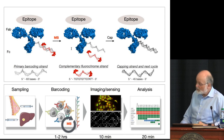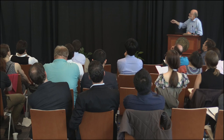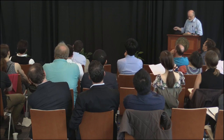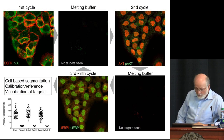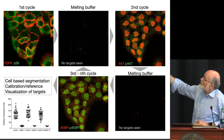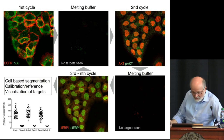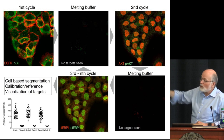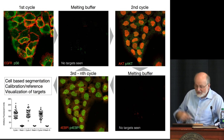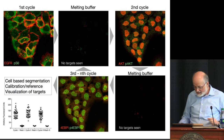Let me show you some examples. These are cells stained with EGFR and phospho-S6 during the first cycle. One adds the melting buffer - no signal at all. Then a second set of antibodies is applied to exactly the same cells. You can see that phospho-AKT or AKT levels show virtually no overlap with the previous staining. Then one can come in with the next set of probes. This cyclic immunofluorescence using melting buffer to wash away the fluorochrome strand works exceedingly well.